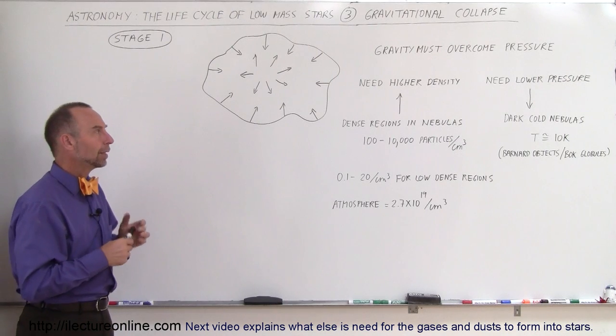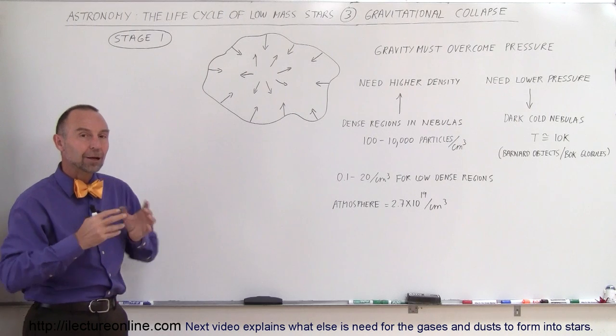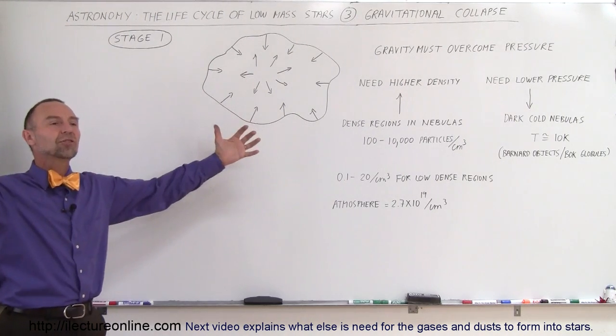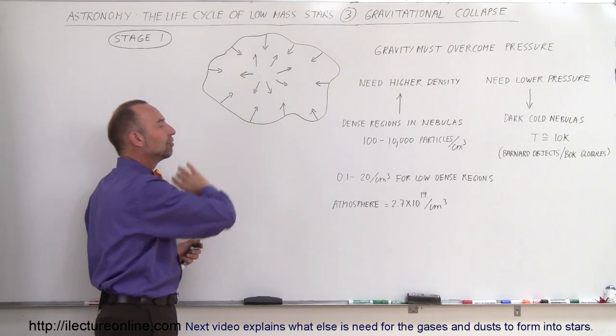How does that start? Well, imagine we have this huge cloud of dust and gas that has enormous quantity of matter there, but spread out over enormous distances, many light years. And so the density of these is very rarefied.